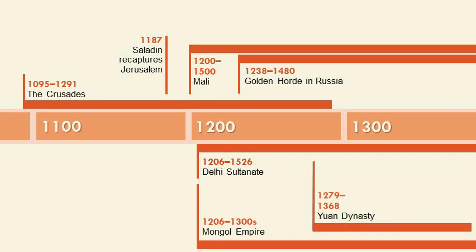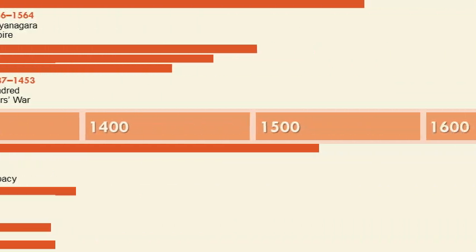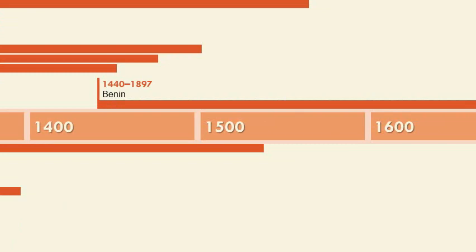Yuan is another Chinese dynasty. The Avignon Papacy is when we have the so-called Babylonian Captivity of the Church. There's also another Indian empire on the timeline. The Hundred Years War will be one of the climactic events in the late middle ages in the west.